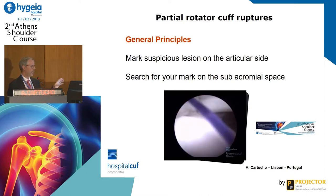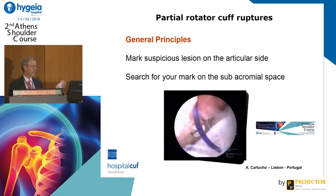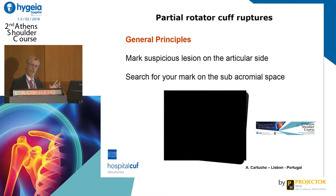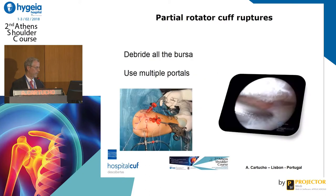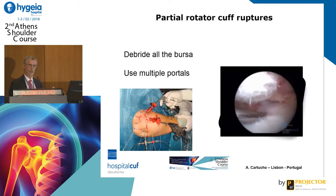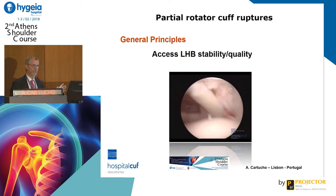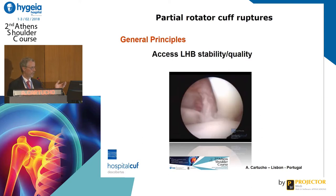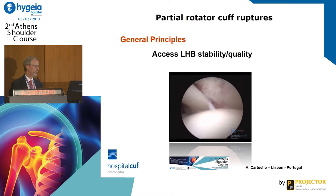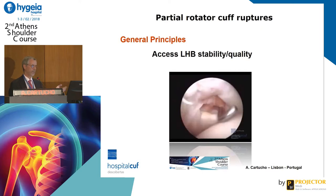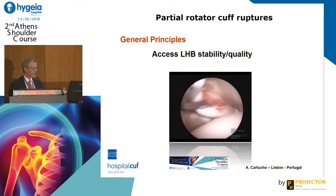To treat, I advise following general principles. Mark any suspicious lesion on the articular side, then go to the bursal side to see if you also have a rupture there — because what seems like a partial rotator cuff rupture may actually be a complete one. It is important to debride all the bursa to completely visualize it using multiple portals. Also assess the stability and quality of the long head of the biceps. In this patient, the anterior pulley is not good and the posterior pulley is gone, and you can see inflammatory signs of the long head of the biceps inside the groove.